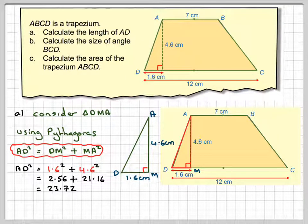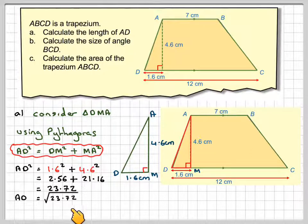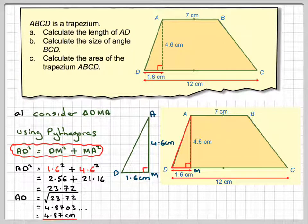That's AD squared. I want to find AD, so I need to take the square root of that, which gives me 4.8703, which is 4.87 centimetres, correct to three significant figures.